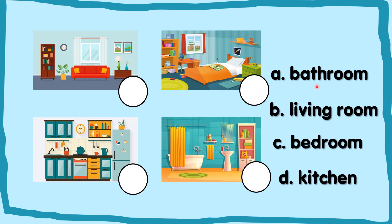You need to read the words over here and fill in the blanks with the alphabet given. There are four pictures over here. The first one is living room. Which one is living room — A, B, C or D? You are right. This is living room. B, living room. So you write a B over here.